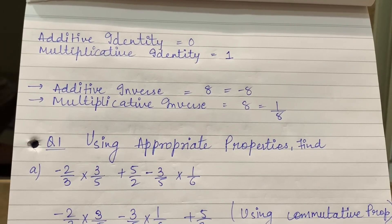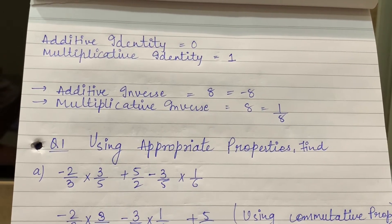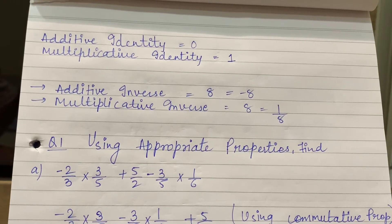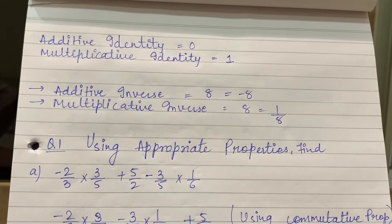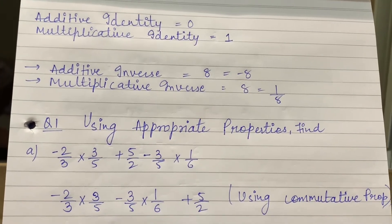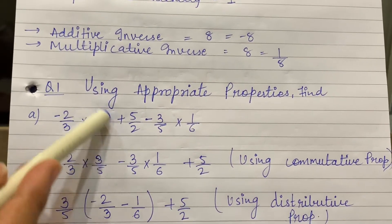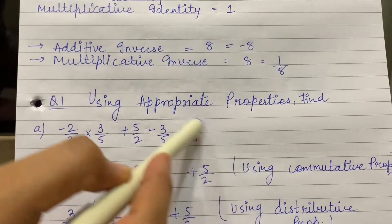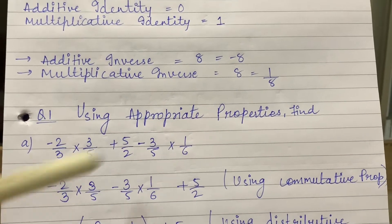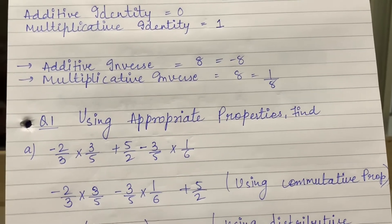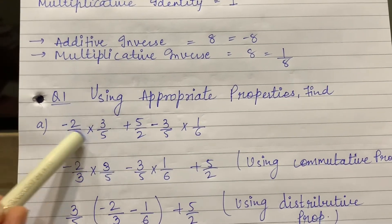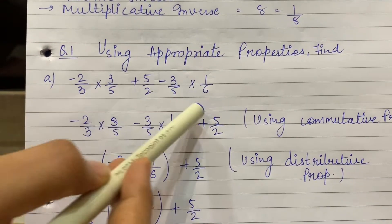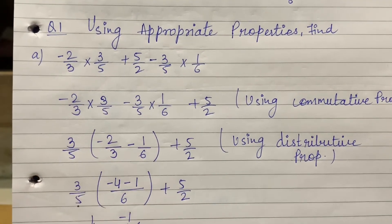It is very clear that multiplication terms can be cut, division terms can be cut, these two can be solved together. Because in these two, 3 upon 5 is common. So we will bring minus 2 upon 3 and minus 3 upon 5 into 1 upon 6 side by side, and plus 5 upon 2 will be kept on the side.